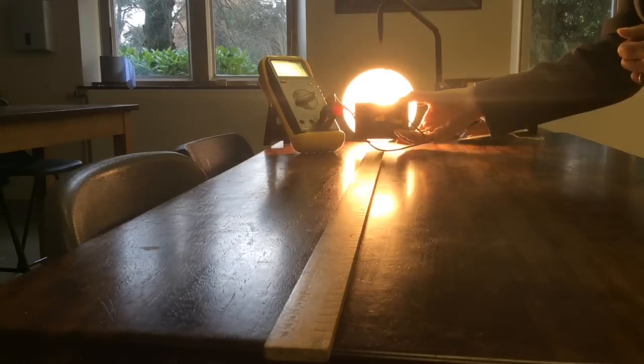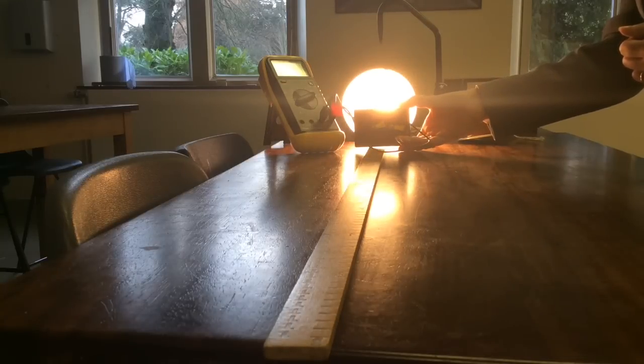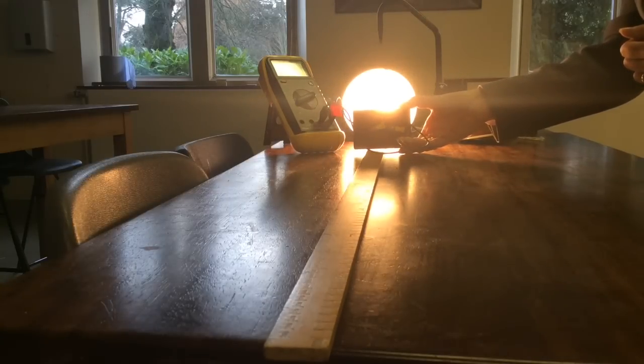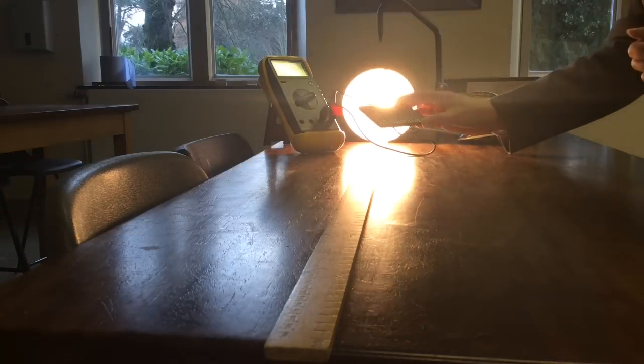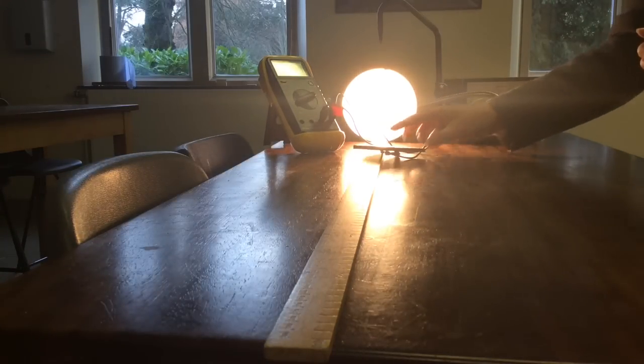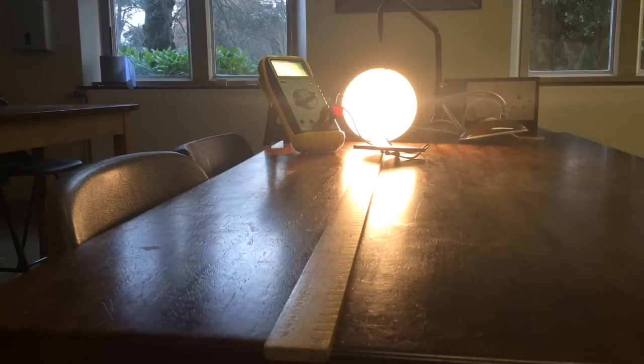Next, move the solar panel further back, perhaps to 20 centimeters, and again record the value on the meter, observing how it changes. When I have five different values, then I'll stop because I should be able to see a pattern.